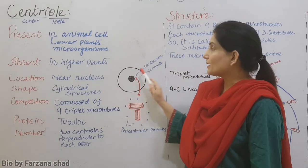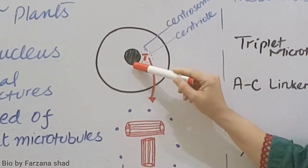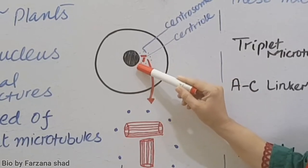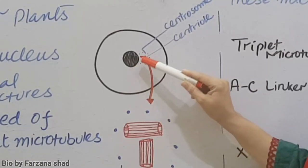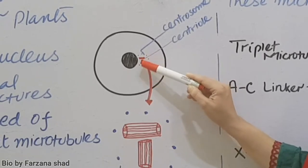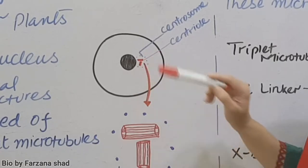Where are they present? You can focus here. Centrioles are present near the nucleus. This is a cell structure. This part is the nucleus. And on the nucleus's exterior surface you can see these two red color structures. These are the centrioles near the nucleus.